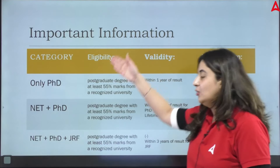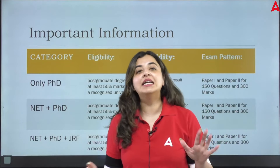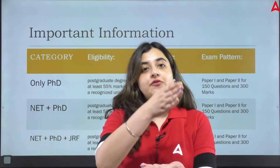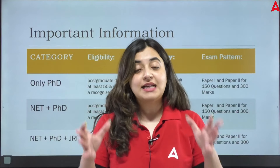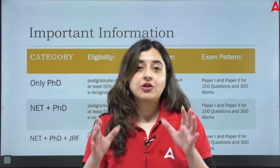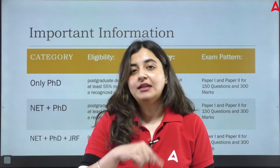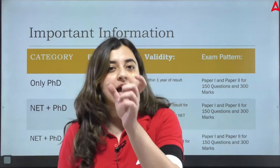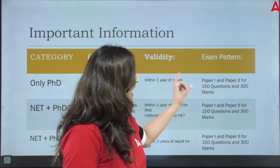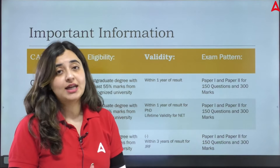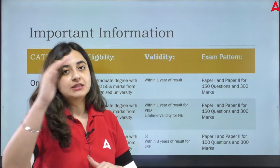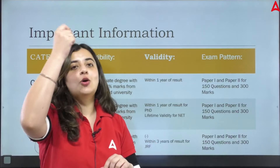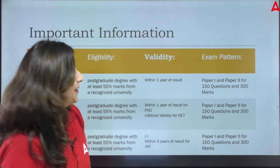Regarding the exam pattern, you do not give separate exams for these three categories — that is the best thing about this examination. In a single exam you get the benefit of three separate categories. You will be asked 150 questions over a span of 3 hours. Each right answer carries 2 marks, and there is no negative marking for wrong answers, so you are competing for 300 marks. Your final merit out of 300 marks will be calculated. To qualify for NET you need to come in the top 6% merit, and to qualify for JRF you need to come in the top 6% of that top 6%.